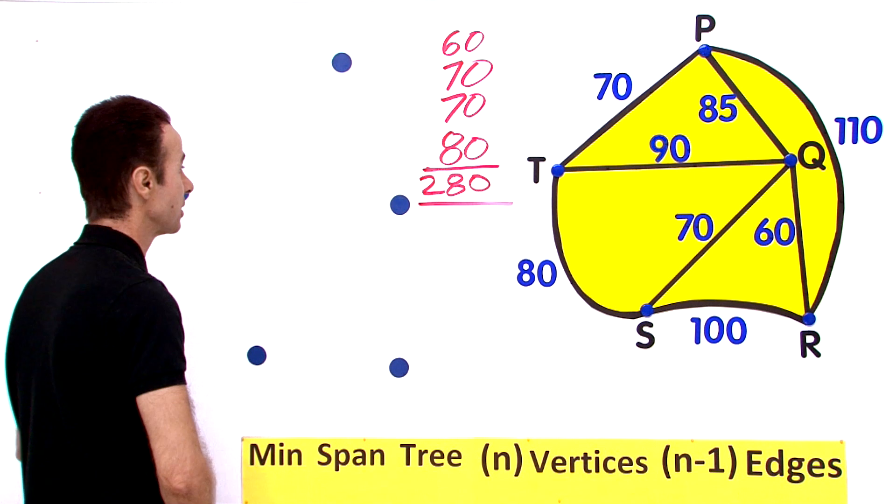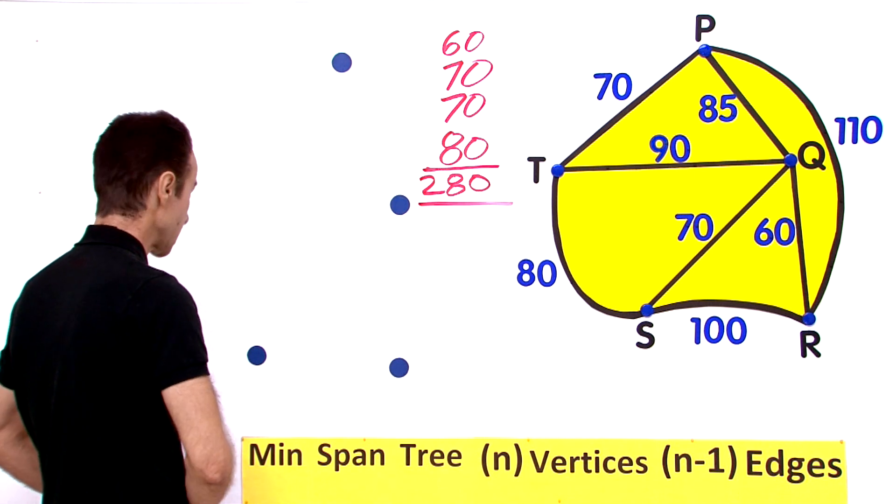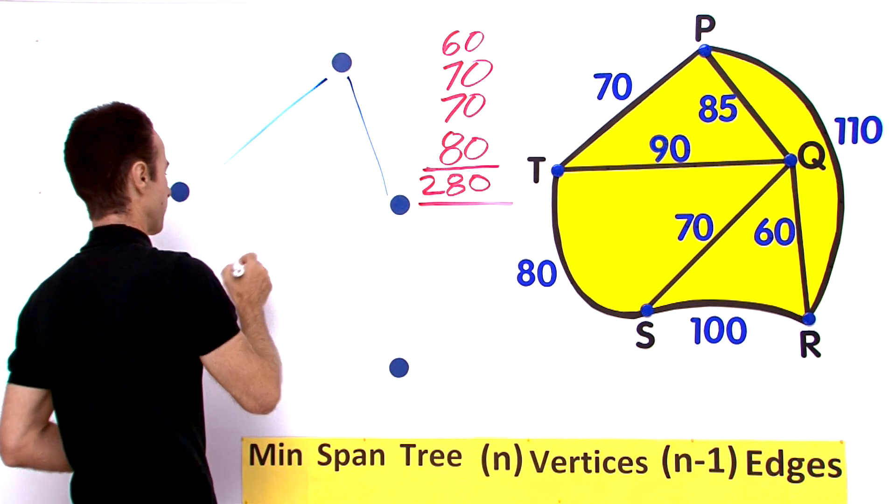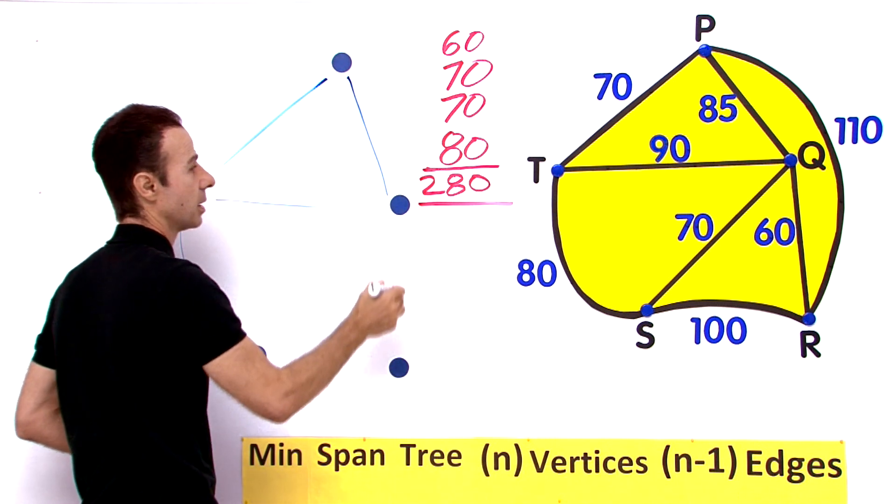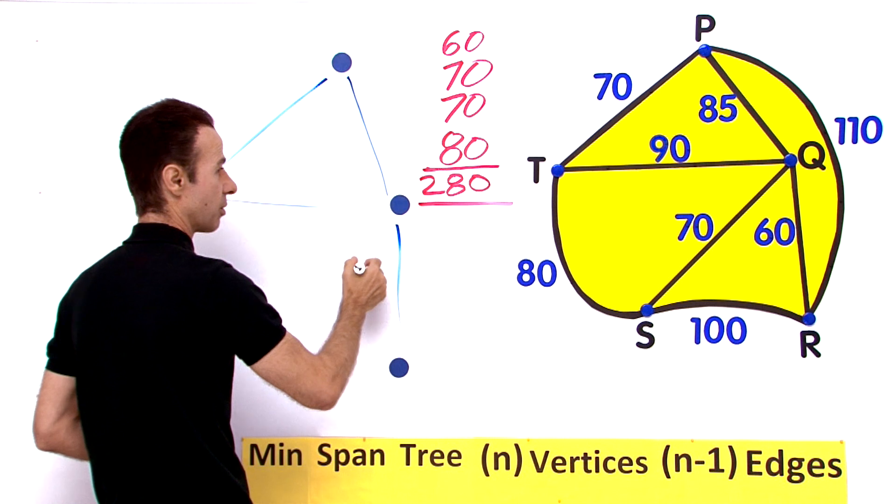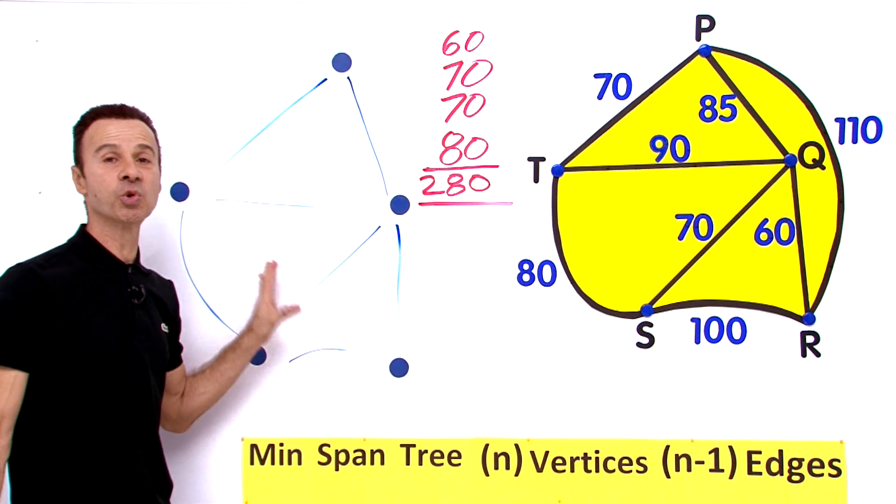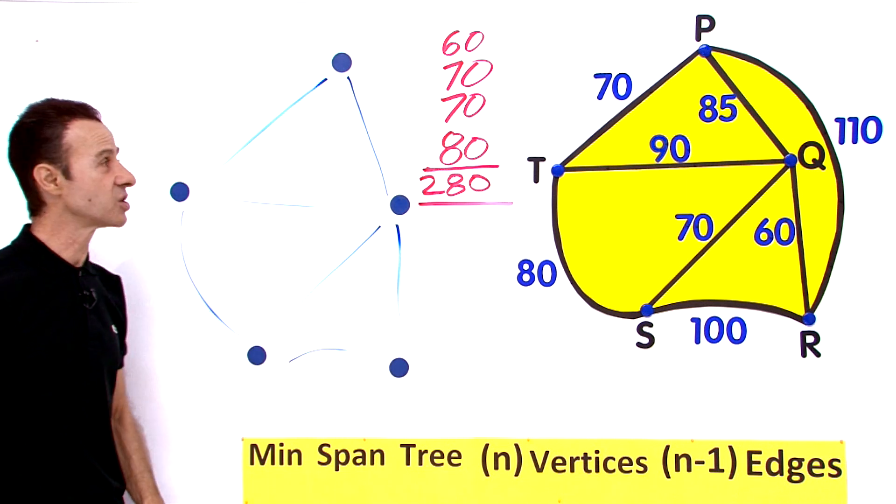Let me just draw some rough lines in between them, just lightly. The minimum spanning tree will be inside this diagram here. So now let us go with the edges.